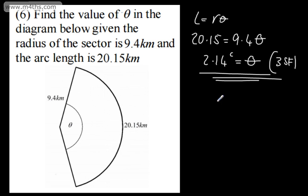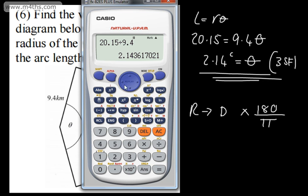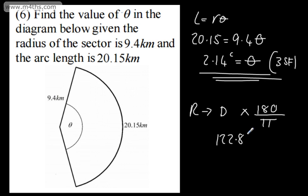If asked to convert to degrees, we multiply by 180 over π, which gives 122.8 degrees — though it's unlikely we'd be asked that. So to summarise: to find the length of an arc when the angle is measured in radians, we simply multiply the radius by the size of the angle — L = Rθ.